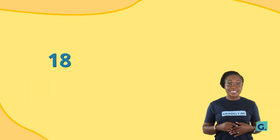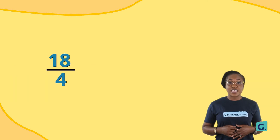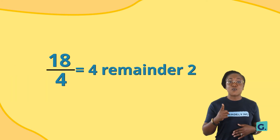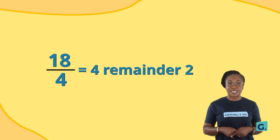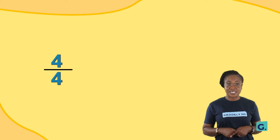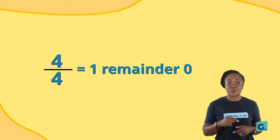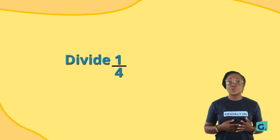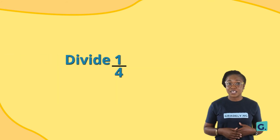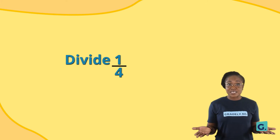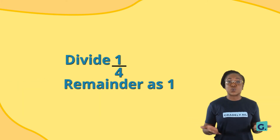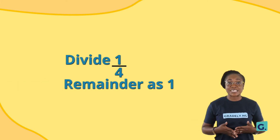18 divided by 4 is 4 remainder 2. 4 divided by 4 is 1 remainder 0. We want 0 as the last digit, so we divide 1 by 4. The mathematical practice is to push the remainder as 1 when this happens.